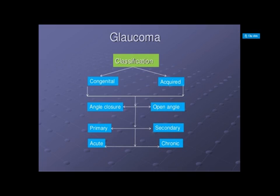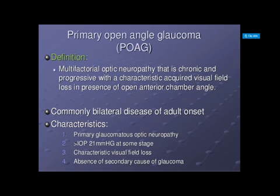Glaucoma can be classified into congenital and acquired, which can be further classified as angle closure and open angle, primary, secondary, or acute or chronic. Primary open-angle glaucoma is a multifactorial optic neuropathy that is chronic and progressive with a characteristic acquired visual field loss in the presence of an open anterior chamber angle. It is commonly a bilateral disease of adult onset. Main characteristics include primary glaucomatous optic neuropathy, raised intraocular pressure greater than 21 mmHg at some stage, characteristic visual field loss, and absence of a secondary cause.